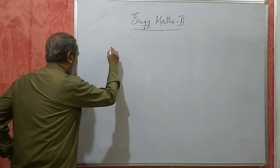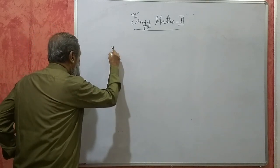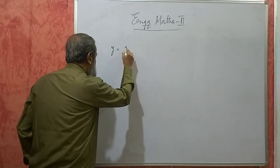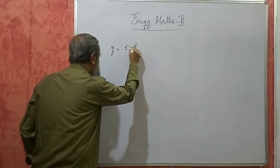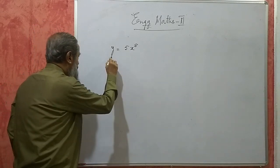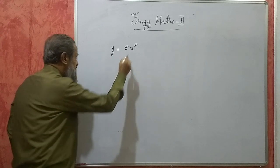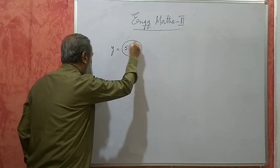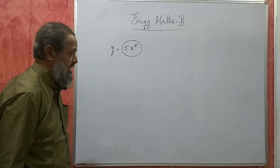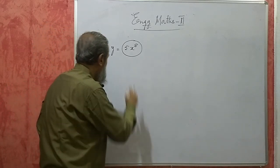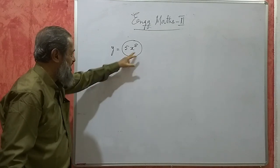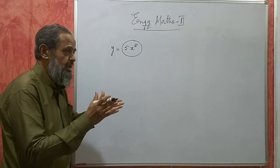Now let us say I have a function here, y is equal to 5x to the power of 8. Now here y is a function of x. This is called a monomial algebraic expression because in this expression there is only one term.